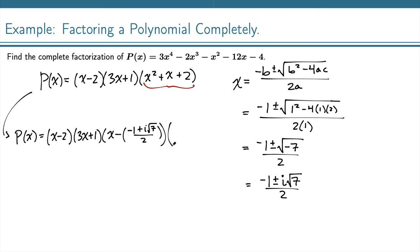And then with the minus, I have x - (-1 - i√7)/2.